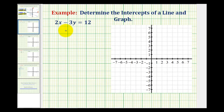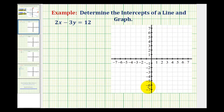We want to determine the intercepts of the line given the equation of the line, which means we want to determine the x-intercept and the y-intercept. The x-intercept is where the line crosses the horizontal axis, and the y-intercept is where the line crosses the vertical axis.